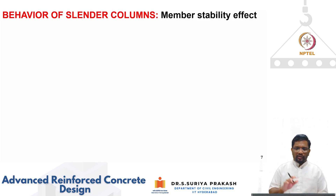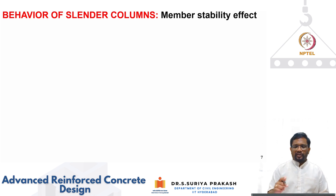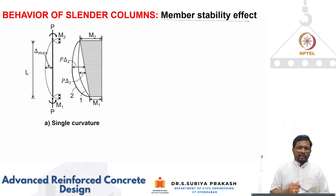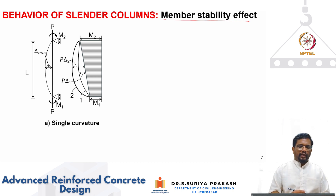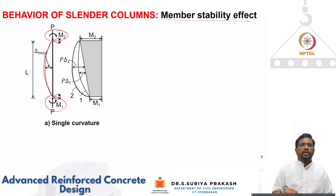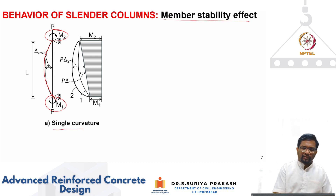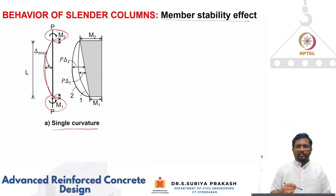There are two important effects to consider. The first is member stability effect. Consider a column subjected to end moments M1 and M2, restrained from sway, bending in single curvature - meaning the deformed configuration curves in one direction throughout. When columns bend in single curvature, we take M2 as the larger moment and M1 as the smaller. The moment profile will reflect both the applied end moments and additional P-delta contributions.